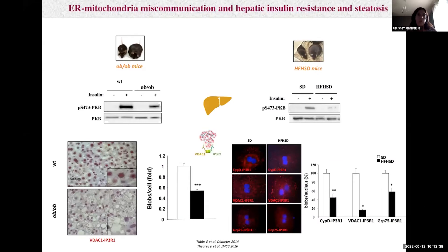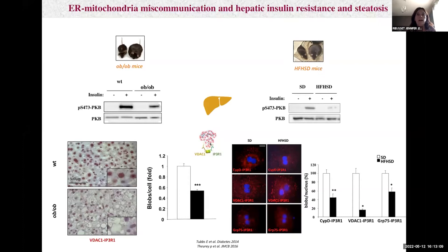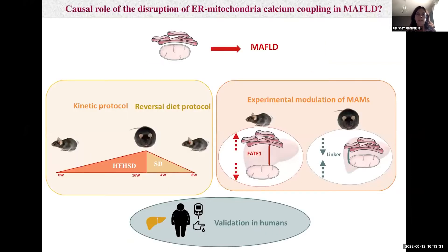To illustrate one of our previous results using genetic and nutritional models of obesity, we demonstrate that fatty steatosis and alterations of hepatic insulin sensitivity — illustrated by the reduction of insulin signaling — are systematically associated with a reduction of ER-mitochondria interactions measured by in situ PLA. However, these previous results are incomplete, as we measured only structural and not functional interactions. It is also unknown whether ER-mitochondria miscommunication plays a causal role in developing hepatic insulin resistance and steatosis.